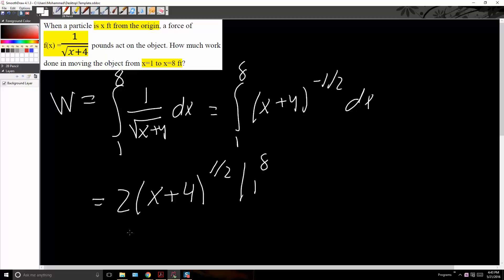So it will be, this is common, 2 is common. So we can say 2, we plug in 8, we get 12. So square root of 12 minus, now we plug in 1, so we get square root of 5.